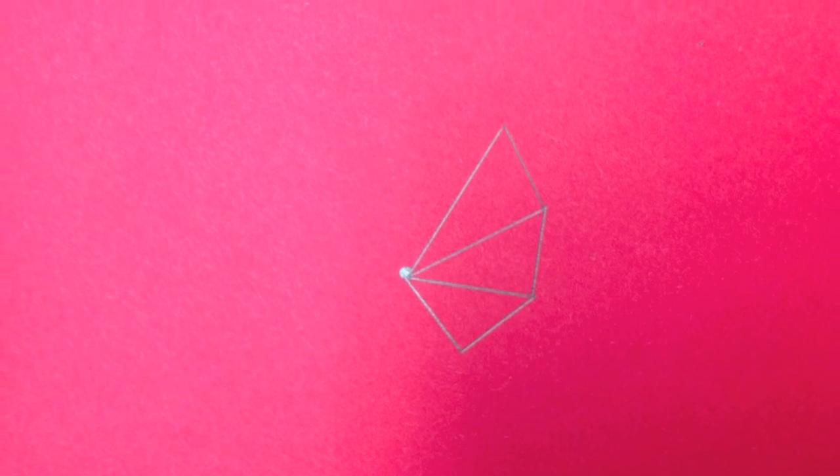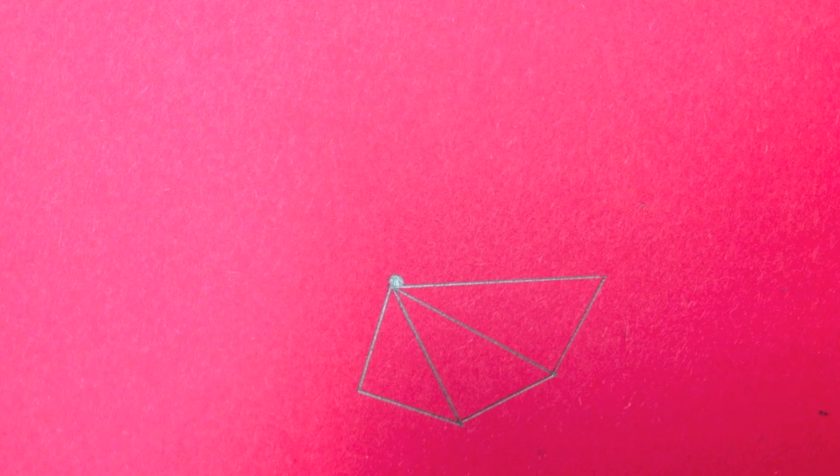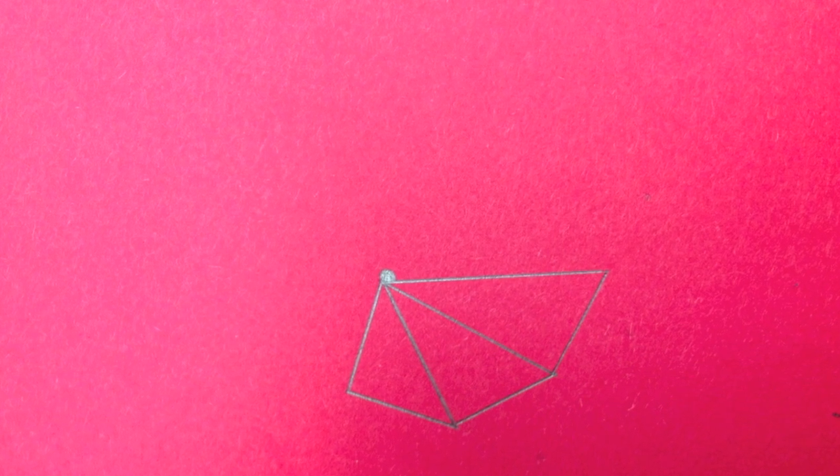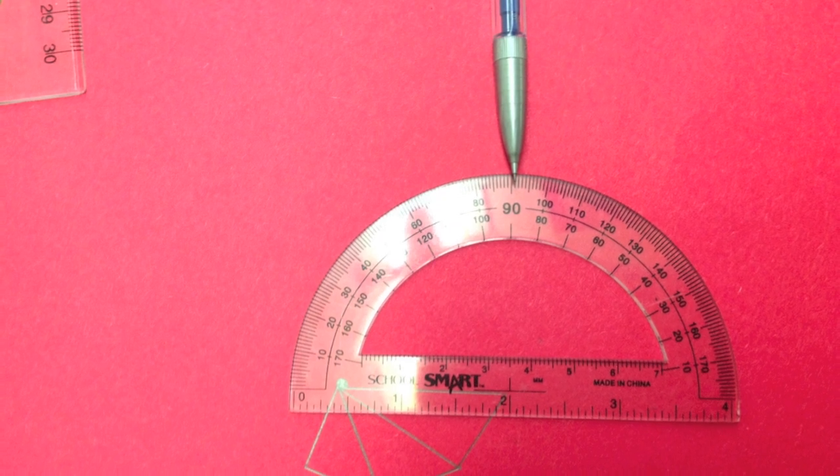And after you connect, you keep rotating. So now the hypotenuse of the third triangle is the base of the fourth triangle. Repeat the steps once more.